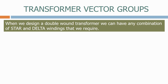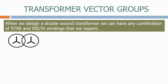When we design a double-wound transformer, we can have any combination of star and delta windings that we require. Here's a star-star transformer, with a star winding on the primary and a star winding on the secondary. A star-star transformer traditionally has a zero-degrees phase shift.